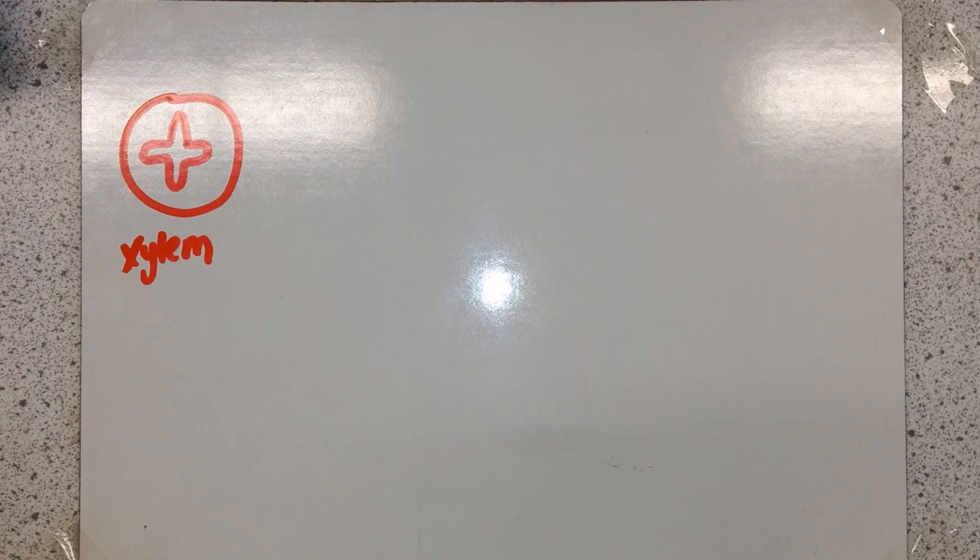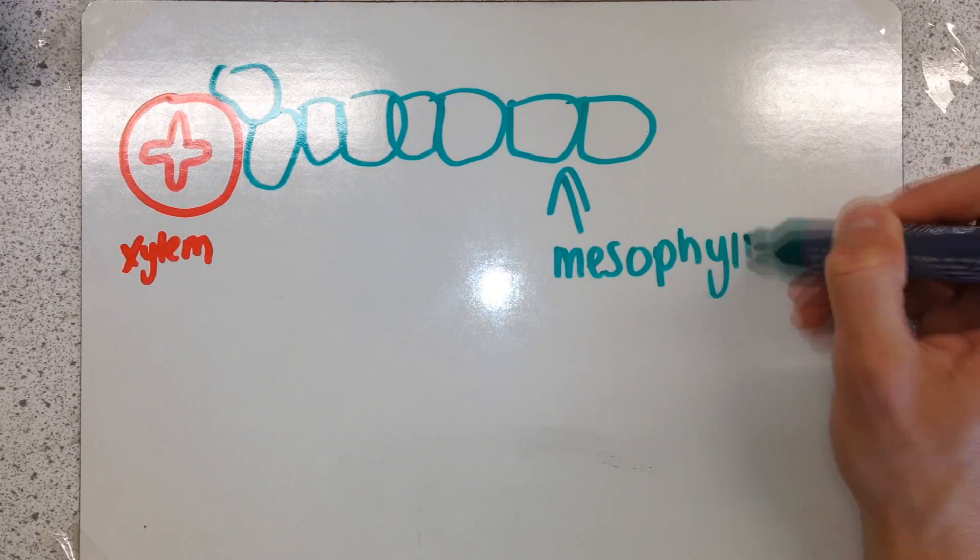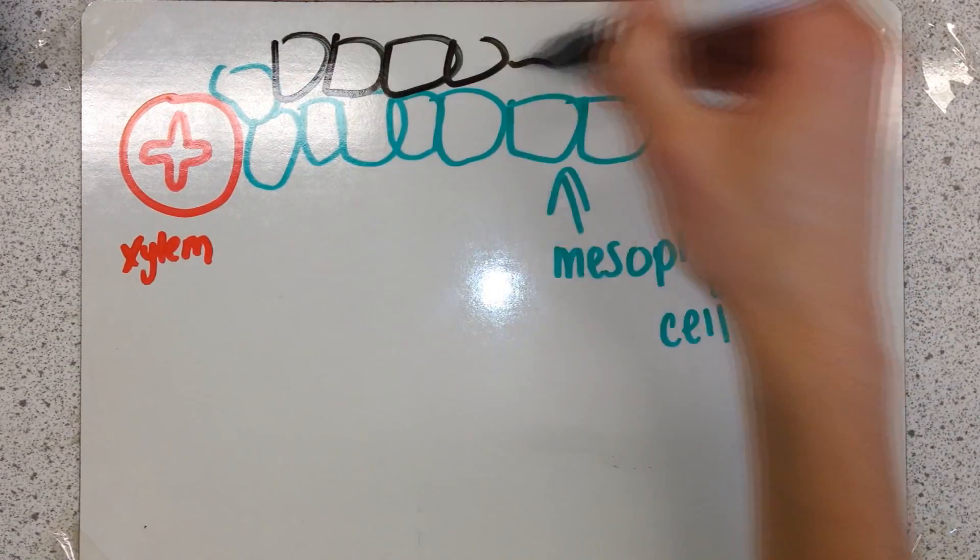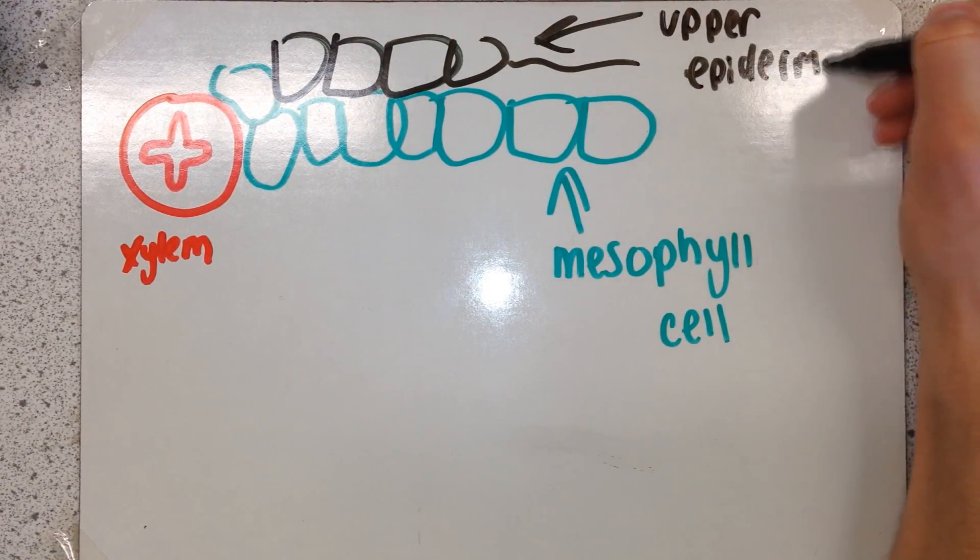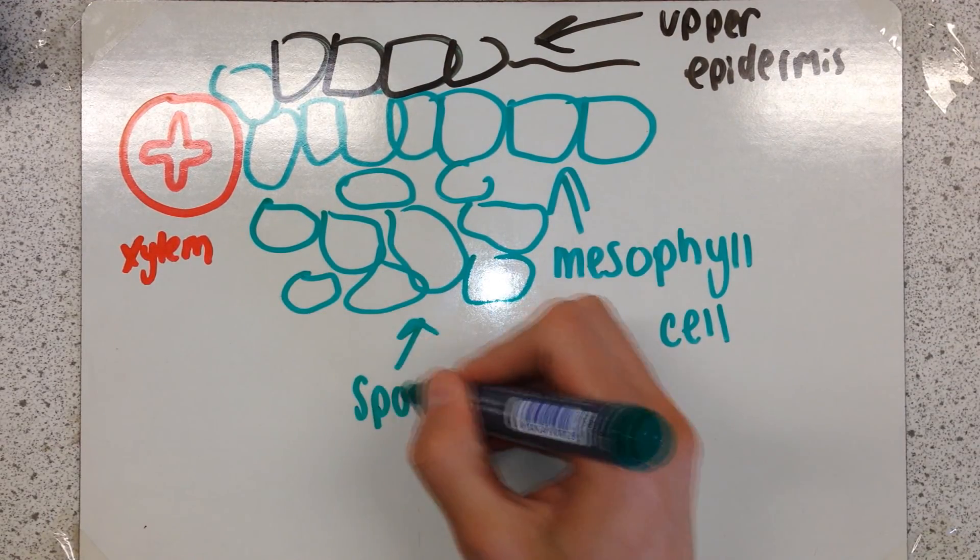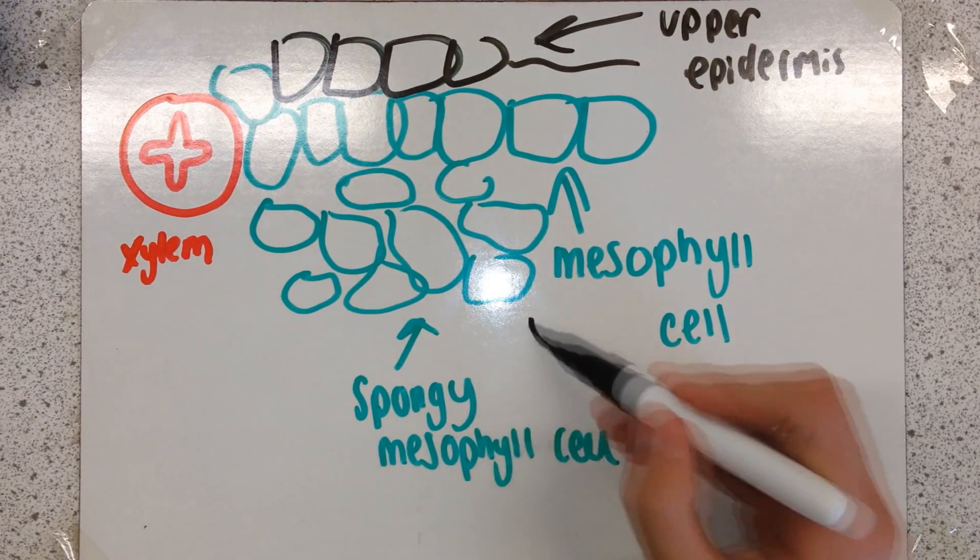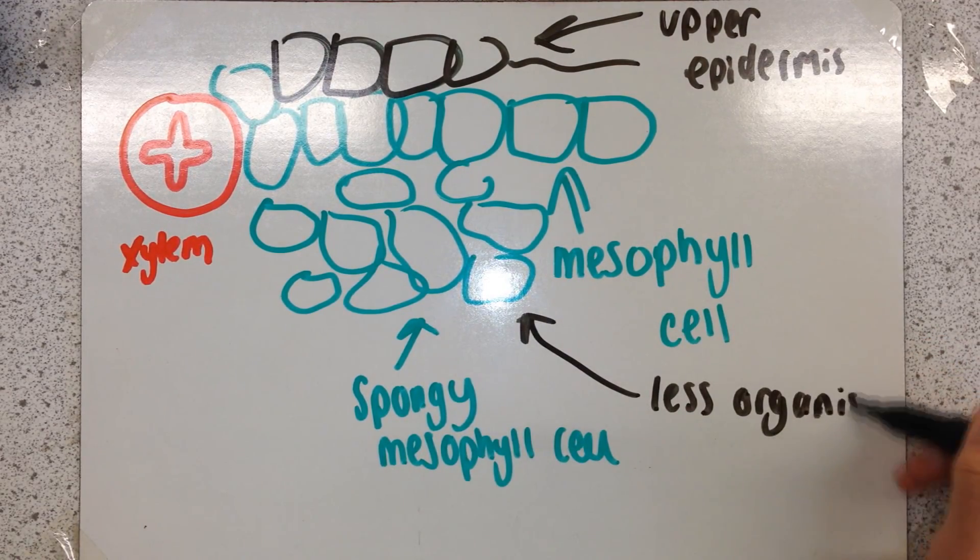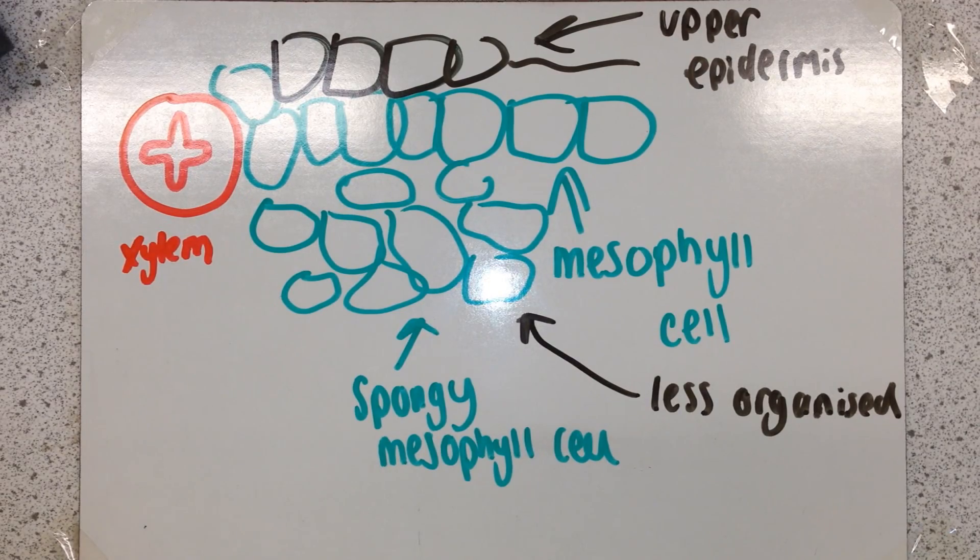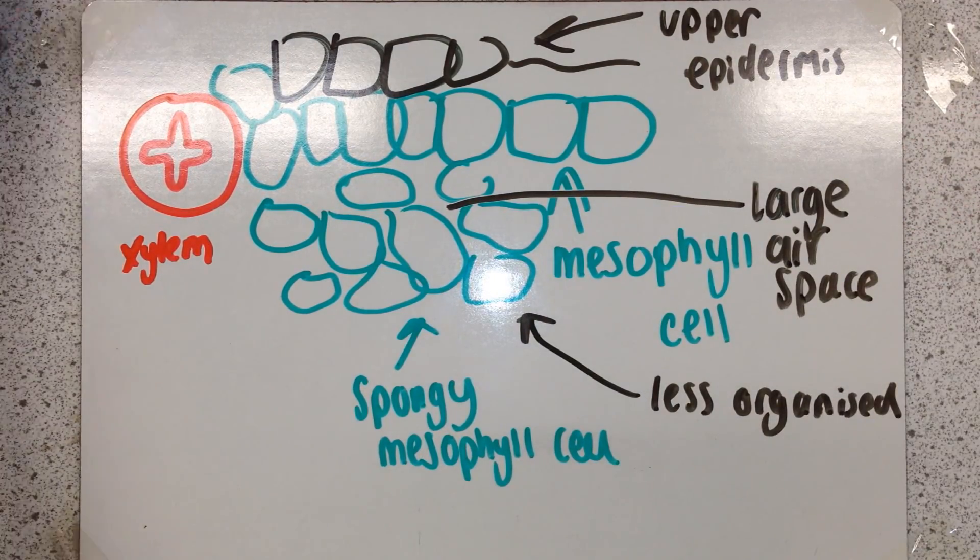This layer of the leaf contains palisade mesophyll cells. Just above that we have the upper epidermis, and here we have spongy mesophyll cells. These cells are not as organized and neatly laid out as the other cells, and because of that you get very large air pockets and air gaps building up in between the cells.